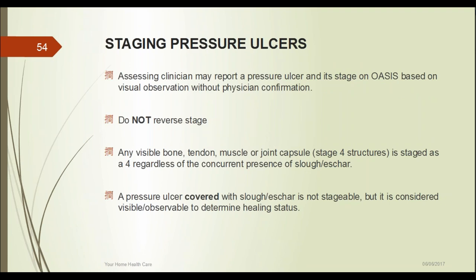Regarding staging pressure ulcers: the assessing clinician may report a pressure ulcer and its stage on OASIS based on visual observation without physician confirmation. The doctor diagnoses the type of wound, but we are trusted to stage the pressure ulcer clinically. For example, if the hospital says stage 2 on the ankle but you observe the wound is down to fatty tissue, you document stage 3 — it may have worsened, or it may have been misstaged. Importantly, we do not reverse stage — a pressure ulcer that originated as a stage 3 does not become a stage 1 as it heals.